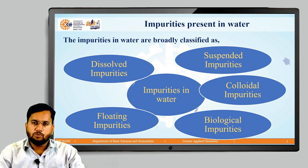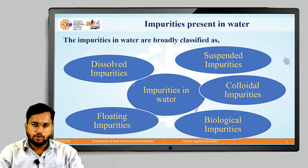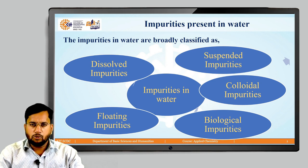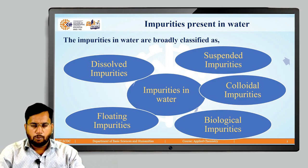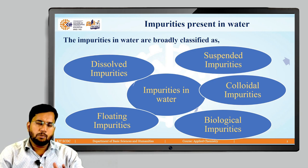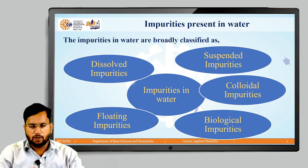Generally, various impurities present in water are classified as dissolved impurities, suspended impurities, colloidal impurities, biological impurities, and floating impurities. There should be a proper classification of impurities present in water, because if we know the type of impurity, then we can select a particular method for the purification of water and to minimize that impurity.